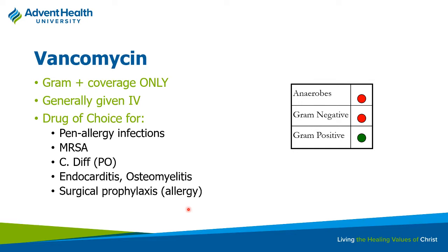Vancomycin is good for gram-positive coverage and can be used as an alternative when a patient cannot receive penicillin or cephalosporin — for example, for surgical prophylaxis in penicillin-allergic patients. Interestingly, it also covers Clostridium difficile, but only via the oral route. It has no appreciable GI absorption, so it causes no systemic side effects when given orally.